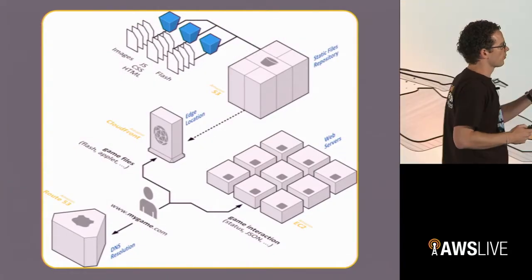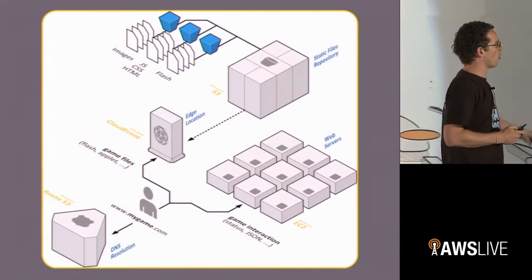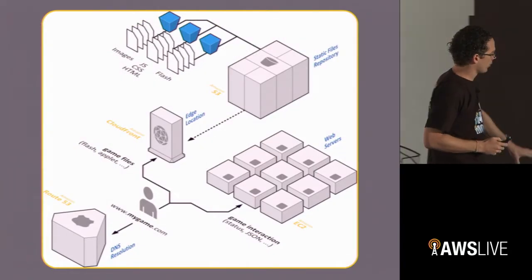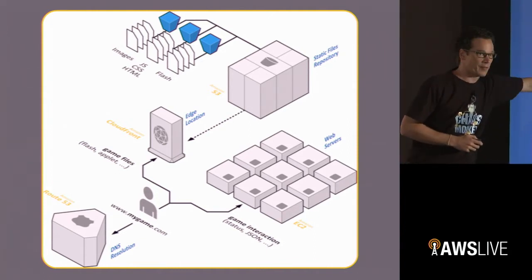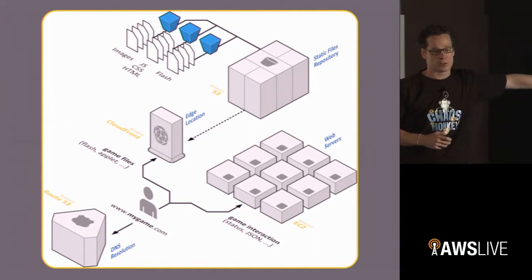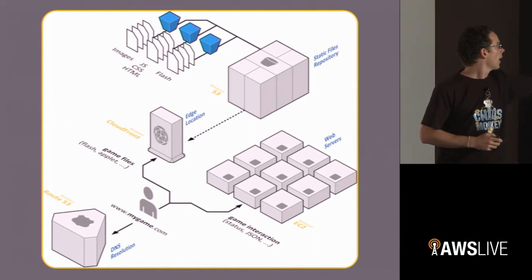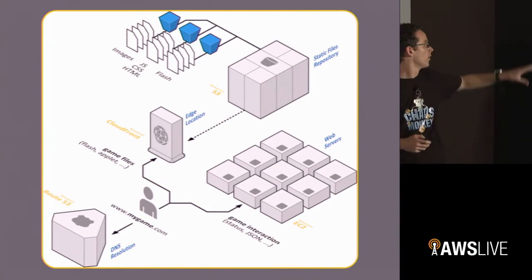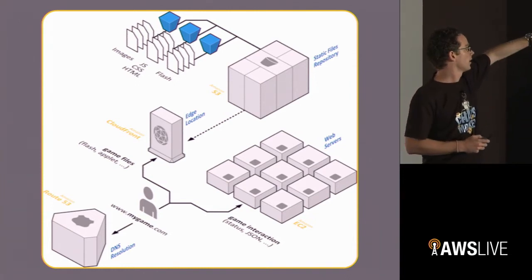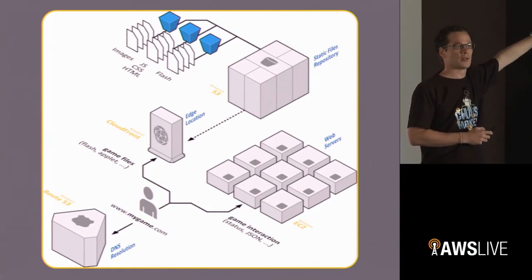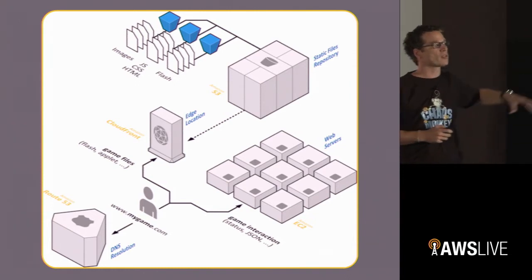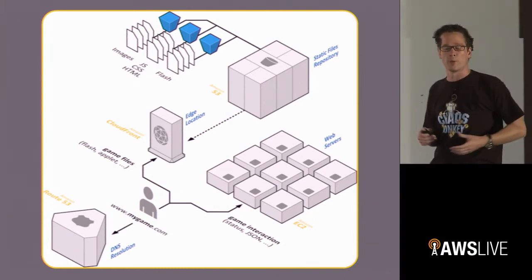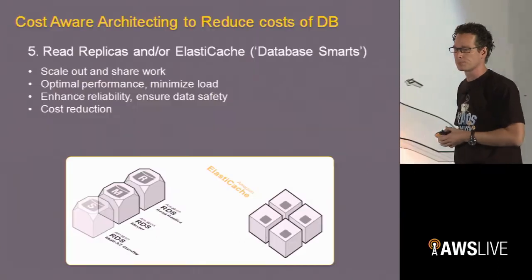Here's a view we've seen before: you have your DNS, your servers, CloudFront and S3 behind it with different buckets. As mentioned, some of those could be reduced redundancy whereas others could be the normal ones.